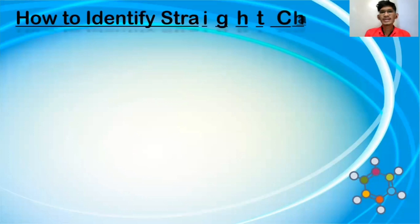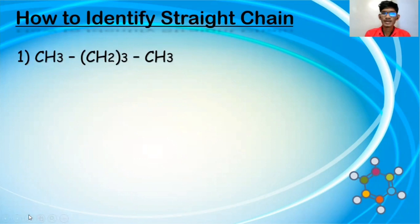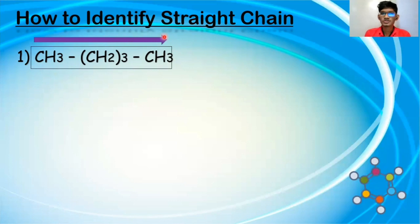Now I will show how to identify a straight chain. The question on your screen is: CH3–CH2–CH2–CH3. In the case of a straight chain, there will be only two terminal points, not more than that. Terminal points are also called endpoints. In this question, the first CH3 is our first terminal point and the last CH3 is the second terminal point. If you start the journey from one CH3 to the other, there is only one way — a straight way.